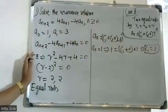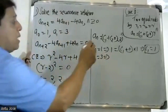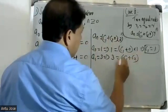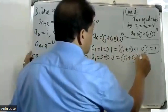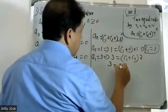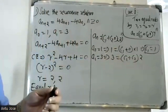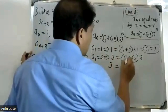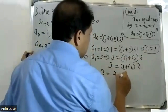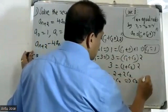Applying the initial conditions: when n = 0, a(0) = C1. When n = 1, a(1) = C1 + C2. Therefore we can solve for C1 and C2.